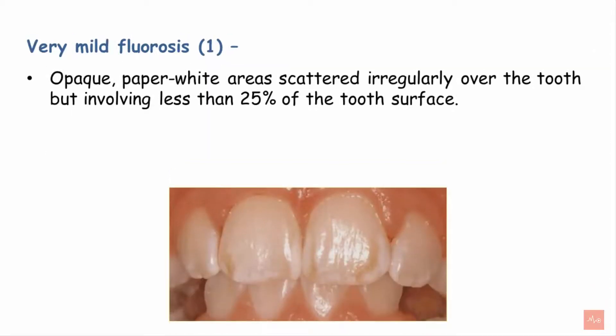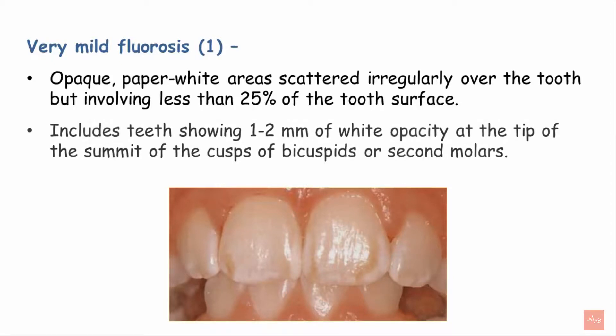Next is very mild fluorosis with a score of 1. Here, opaque paper-white areas scattered irregularly over the tooth are seen, but it involves less than 25% of the exposed tooth surface. It also includes teeth showing 1 to 2 mm of white opacity at the tip of the cusp of bicuspids or second molars.